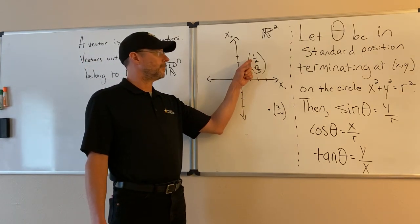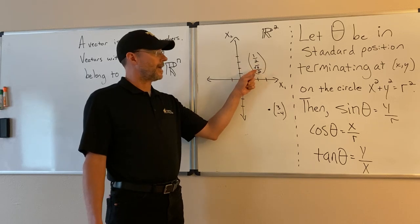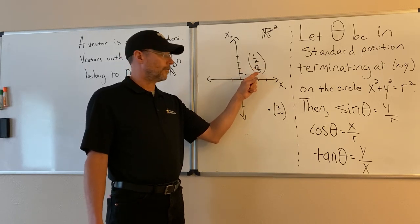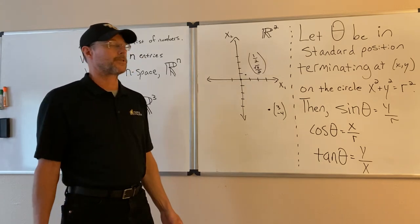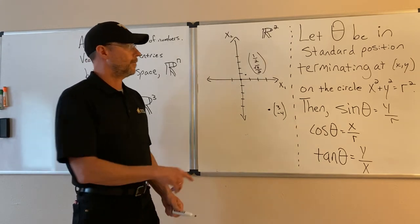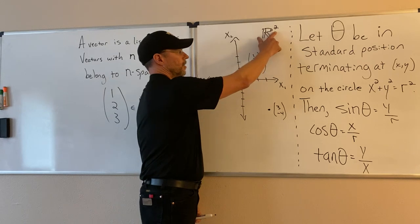The list 1 half and root 3 over 2, that's a pair of numbers. So that is a list of two numbers. So that belongs to two-space and we denote two-space with R^2.